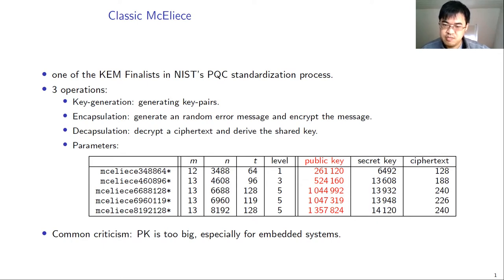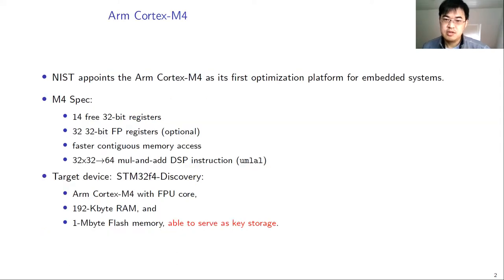This problem is more severe in an embedded system because it usually doesn't have so many storage spaces. We use the ARM Cortex-M4 as our optimization target. This is because NIST chose the process as its first platform for embedded systems. The M4 processor has 14 32-bit registers. If the processor has a floating-point unit, this is an option.